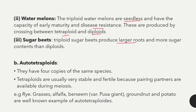Triploid sugar beets produce large roots and more sugar content than diploids. Auto tetraploids have four copies of the same set of chromosomes. Tetraploids are usually very stable and fertile because they have pair partners available during meiosis. Examples of auto tetraploid are rye grasses, alfalfa, groundnut, and potato.